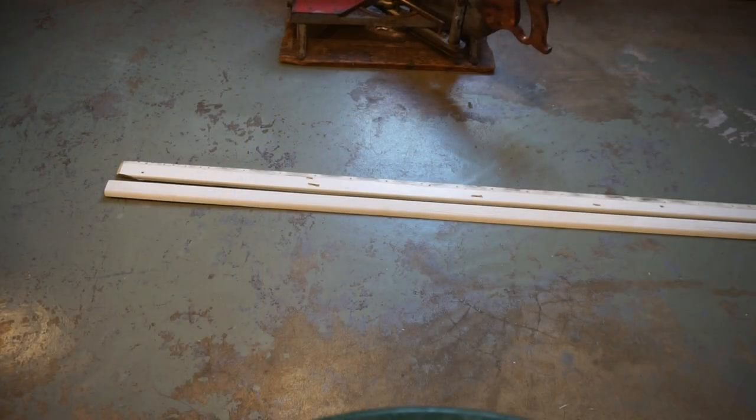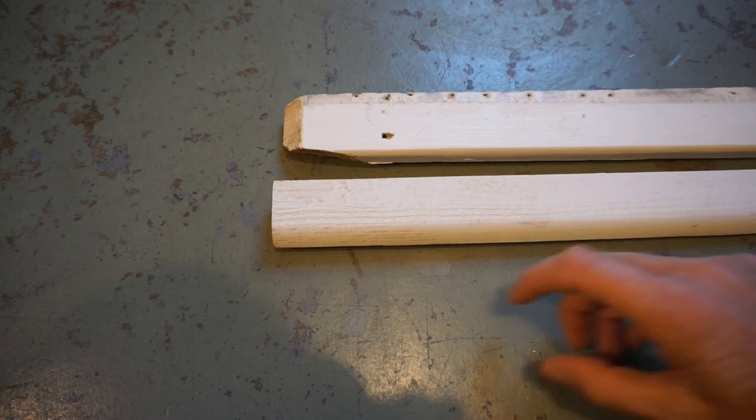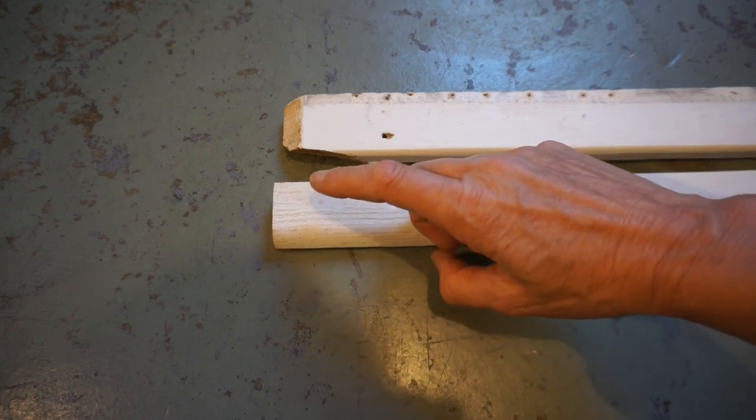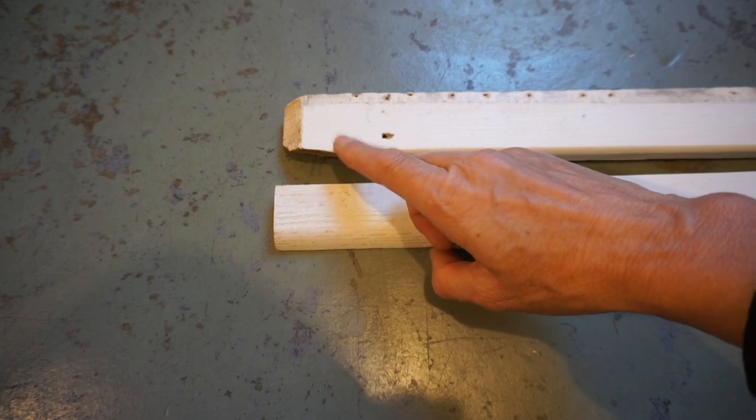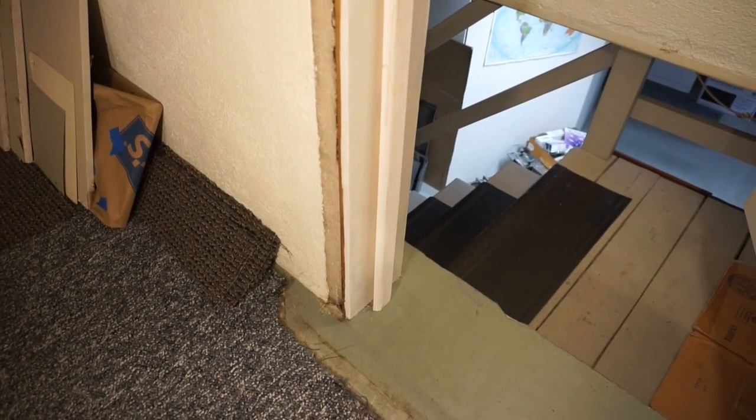Then transfer the measurements for the two old side pieces to the new moldings and cut them. When you're doing this, be mindful to cut the correct angle on the correct end of the molding. Dry fit the pieces after they're cut and make any adjustments if needed.